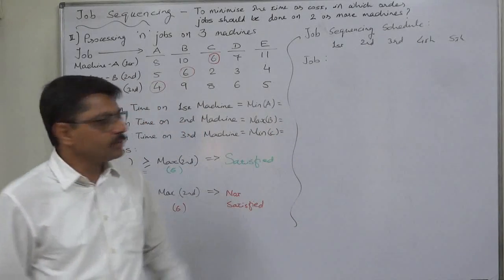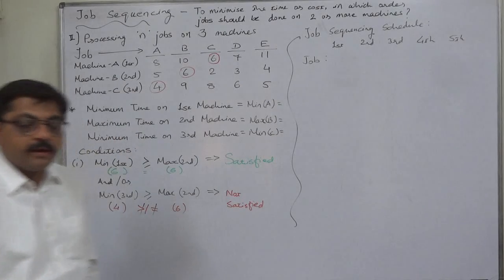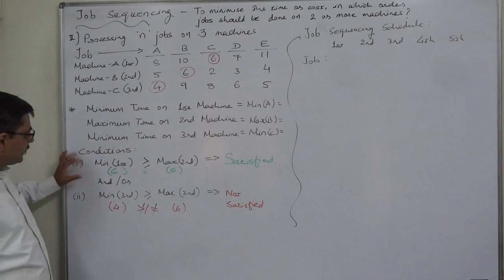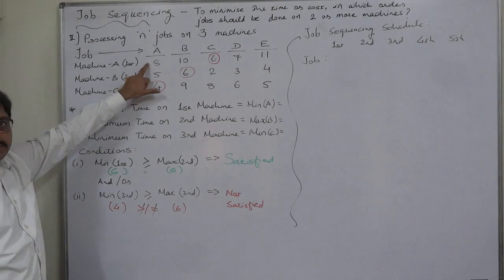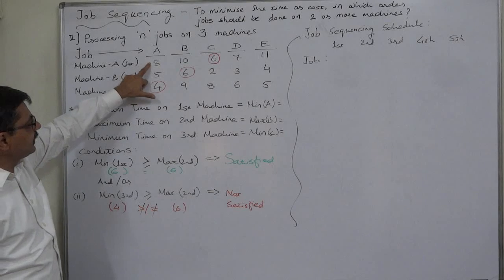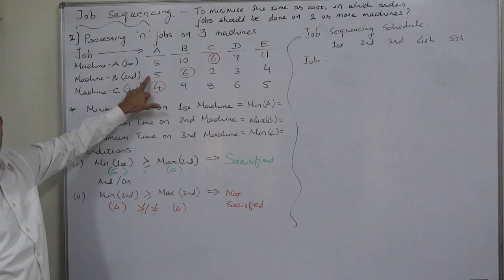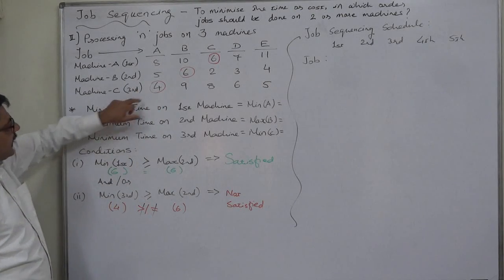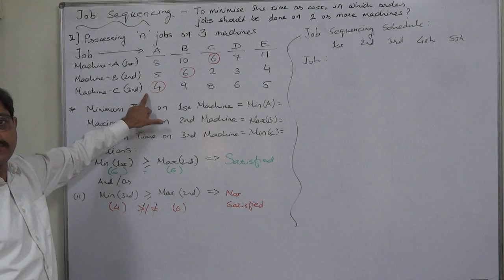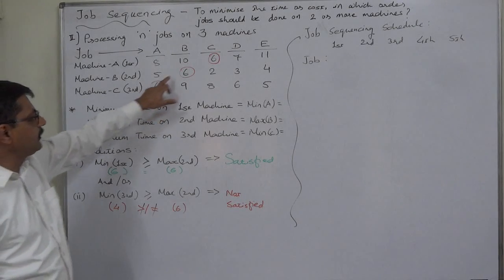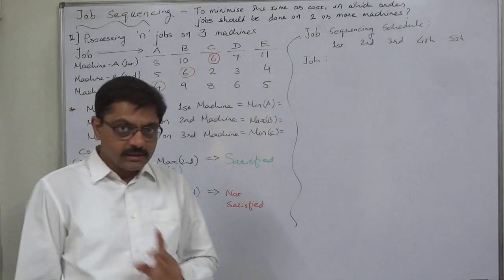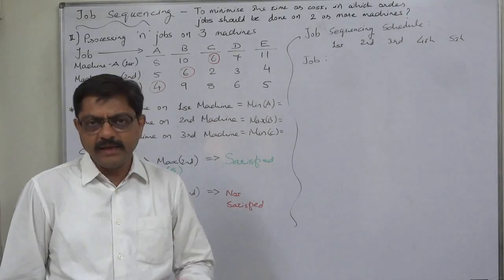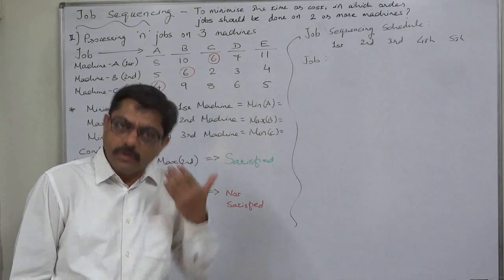For the purpose of preparing the job sequencing schedule, what are the conditions? Condition one: the minimum time on the first machine should be greater than or equal to the maximum time on Machine 2. Condition two: the minimum time on the third machine should be greater than or equal to the maximum time on Machine 2. If any one of these two conditions is satisfied, we can move forward.